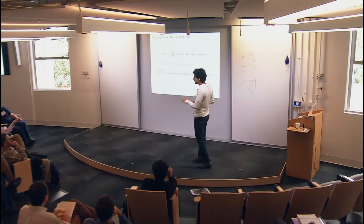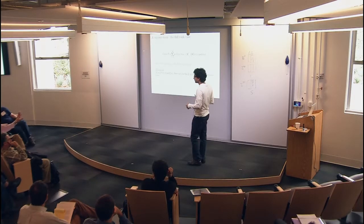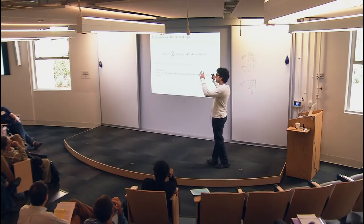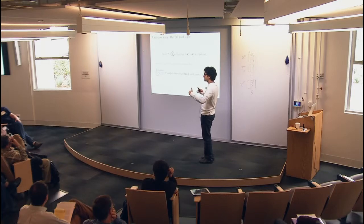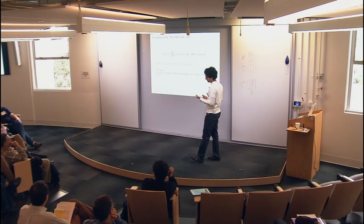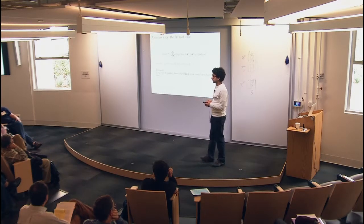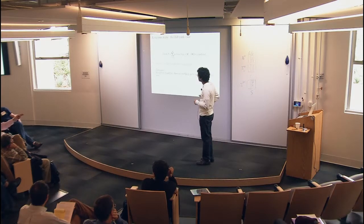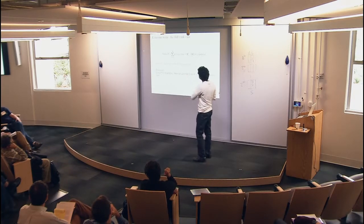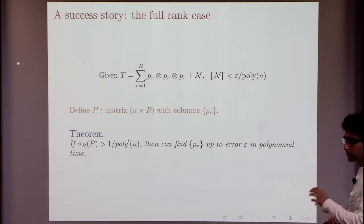To clarify: we don't know what P is. We estimated the tensor T from our documents, so we know T but we don't know the P's — that is the problem. What I'm saying is: you can estimate T without knowing the parameters P. And if the true P's happen to satisfy this property that σ_R is more than 1/poly, then you can recover them.